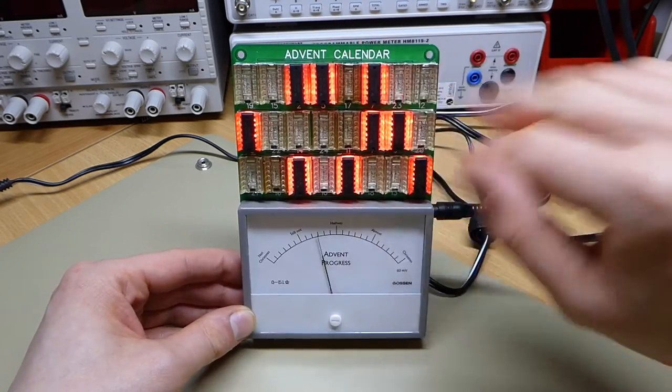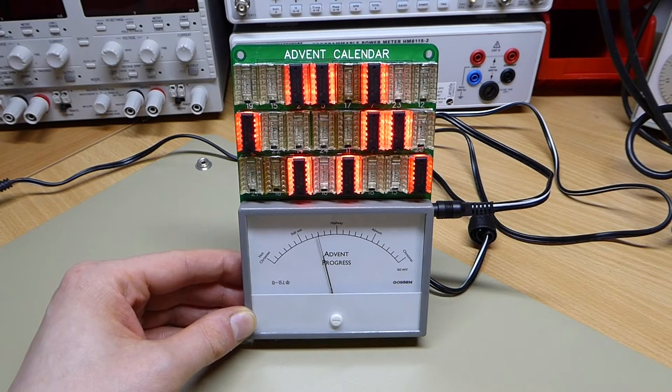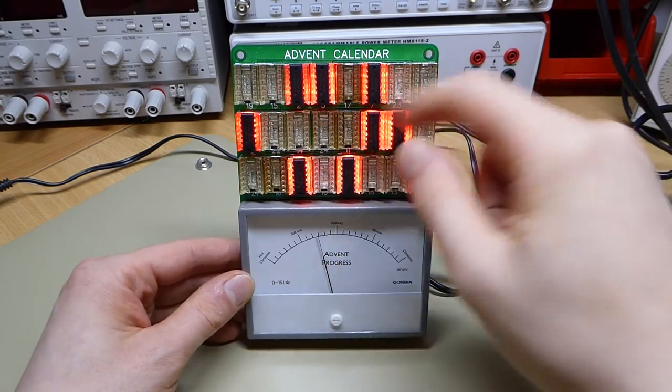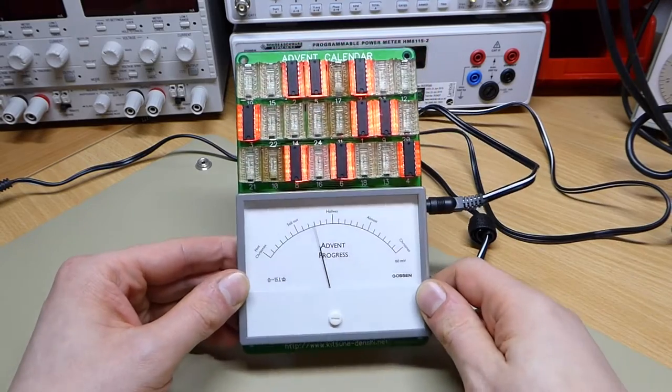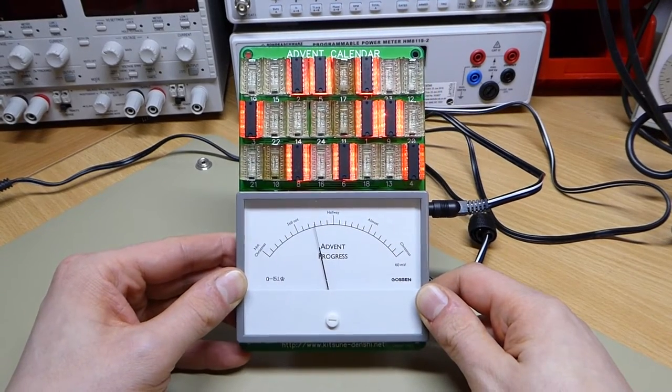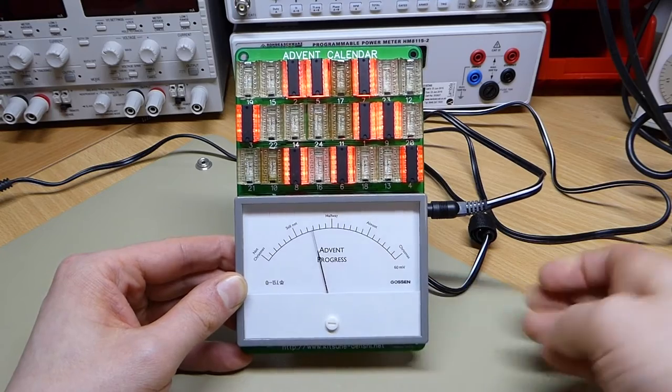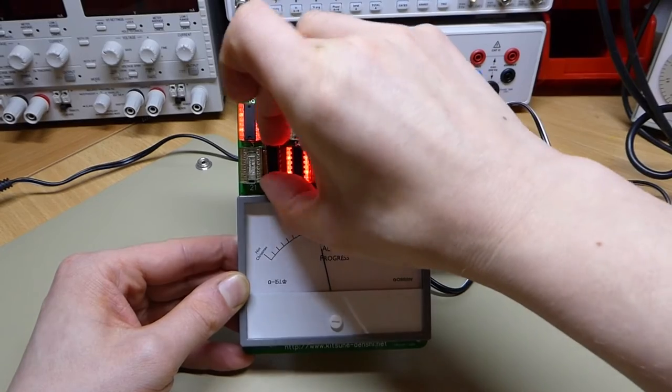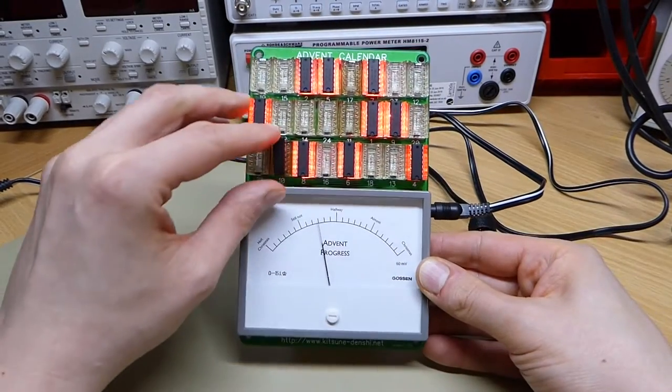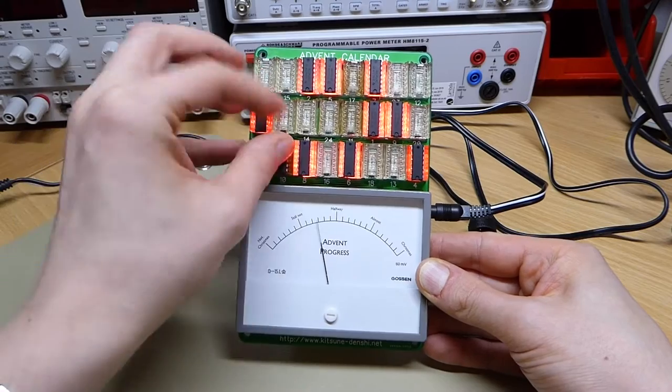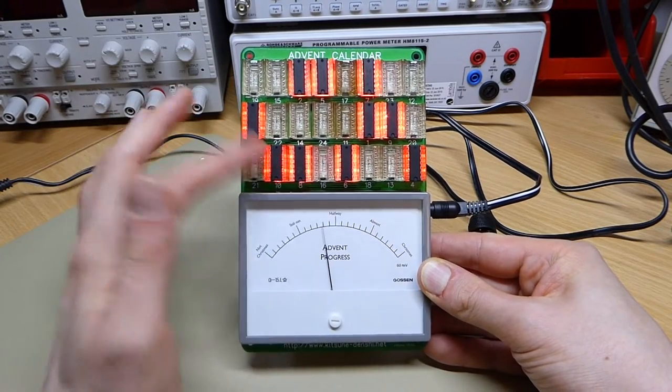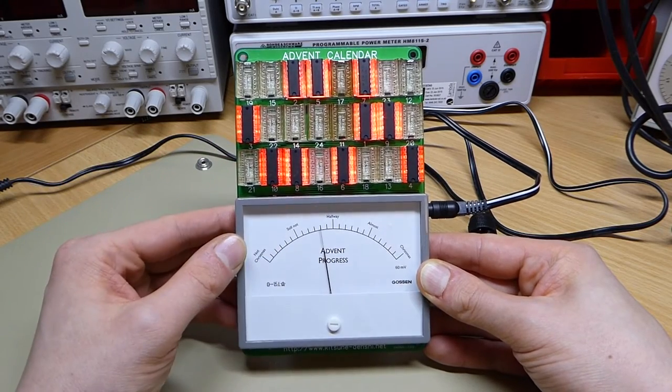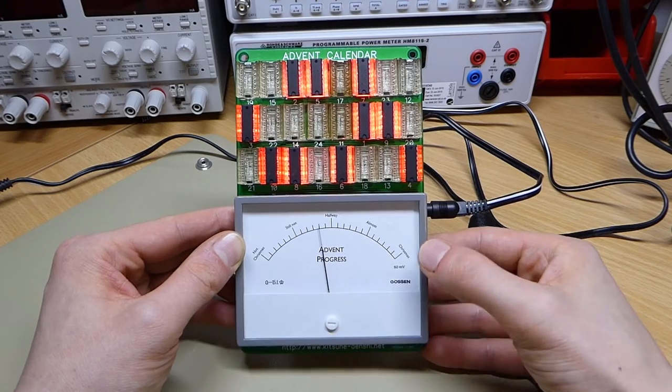It's quite simple: you have 24 IC sockets here and a big meter. The way it works is that every day you plug an IC into the corresponding socket for that day. For instance, right now we have all the ICs up to day 9. If we put the IC for day 10 in—struggling with the camera—there we go. You can see the socket for the 10th day is lit up and the meter has moved on by one division further towards Christmas.